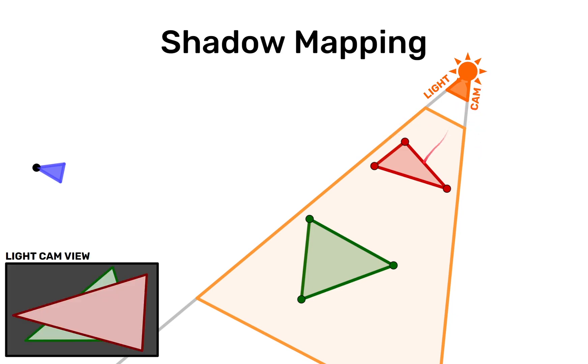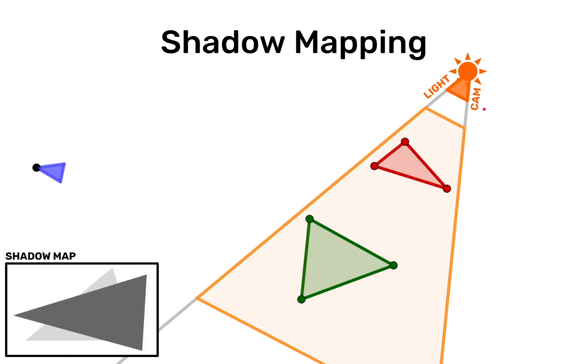So the light cam sees the scene like this. It sees that the red triangle is in front of the green triangle from its perspective. But it doesn't actually need to know the colors of these triangles. All it needs to know is the depth of those objects.